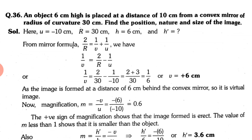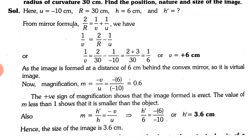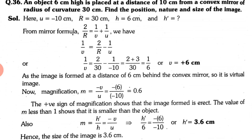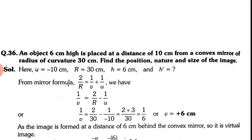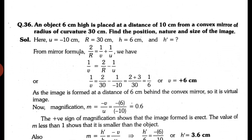Solving the mirror formula carefully (taking LCM correctly), you get v equals plus 6 cm — positive means the image is on the right side of the mirror, which is correct for a convex mirror. To find the size, use magnification: h-dash by h equals minus v upon u. Substituting v equals 6, u equals minus 10, h equals 6 cm, you get h-dash equals 3.6 cm. So this was all about some important questions on reflection. Do revise them and note them down in your fair notebook. Thank you and have a nice day.